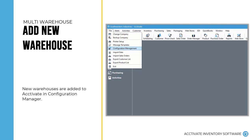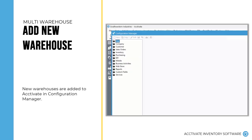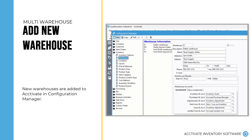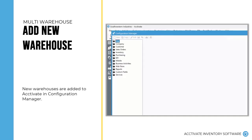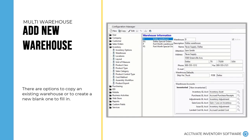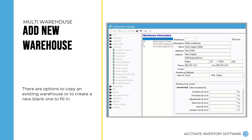Once you've got your list of warehouses you'd like to create in Activate, you'll log into the system as an admin and open Configuration Manager. Then you'll go to the Inventory and Warehouse section, and you'll be able to see a list of warehouses in your database. When adding a warehouse, you can choose to add a new warehouse from scratch, or you can copy an existing warehouse.